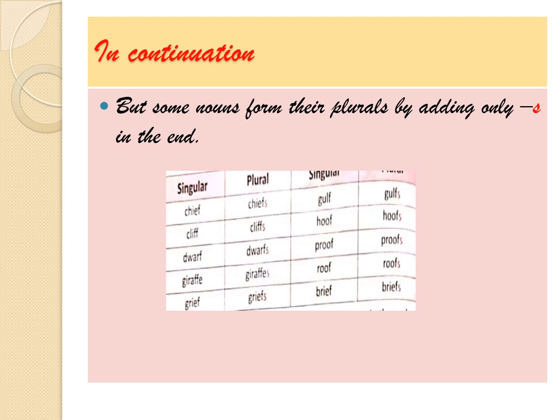But some nouns ending in F form their plurals by adding only S at the end. There are some nouns which take just S when changed to plural. Like: chief/chiefs, cliff/cliffs, giraffe/giraffes, roof/roofs. So there are some nouns which can be formed into plural by simply adding S to them.